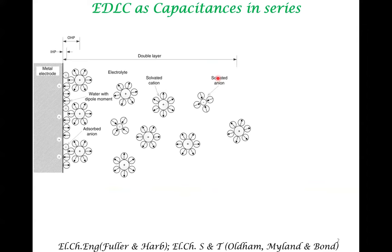In the earlier lectures, we had discussed two models for modeling the EDLC. In the Helmholtz model, the focus was predominantly on ions that are adsorbed to the electrode surface, which gave a behavior wherein capacitance was independent of voltage. In the Gouy-Chapman model, the focus was on ions that are present throughout the entire double-layer.